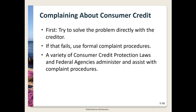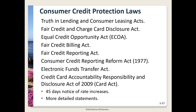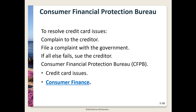If you're having a problem with consumer credit, your first step is to contact the creditor and try to resolve it. If that fails, file a formal complaint. There are eight major consumer credit protection laws currently on the books: the Truth in Lending and Consumer Leasing Acts, Fair Credit and Charge Card Disclosure Act, Equal Credit Opportunity Act, Fair Credit Billing Act, Fair Credit Reporting Act, Consumer Credit Reporting Reform Act, Electronic Funds Transfer Act, and Credit Card Accountability Responsibility and Disclosure Act. Under all these laws, you have the right to complain to the creditor, file a complaint with the government, and ultimately sue the creditor. The Consumer Financial Protection Bureau is a government agency specifically created to make sure banks, lenders, and other financial companies treat you fairly.